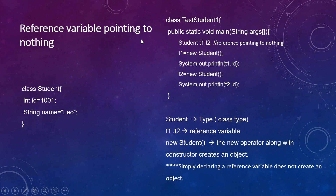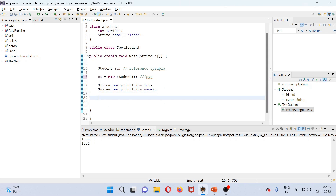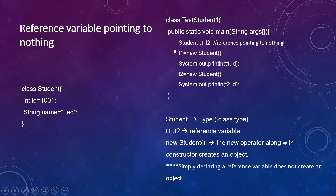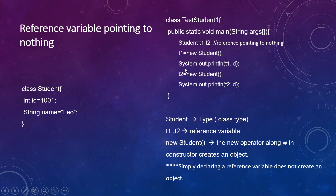Reference variable pointing to nothing — you can have multiple reference variables. Like you can have Student t1 and t2 and not point them to anything. At that point I didn't point it to anything — it was just a placeholder. Only when I'm assigning it to something am I actually accessing it.